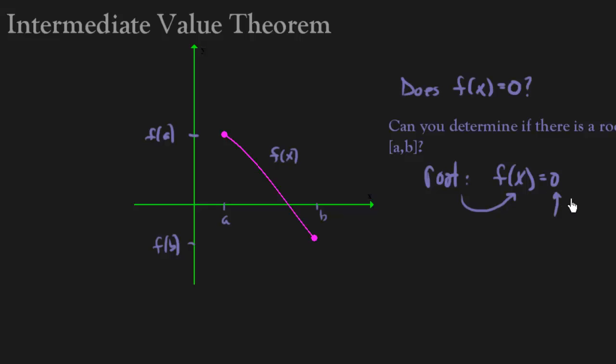So think of this as my y value. Does the intermediate value theorem guarantee me a y value of 0? Well, notice that 0 is between f of a and f of b. Right, f of b is negative.